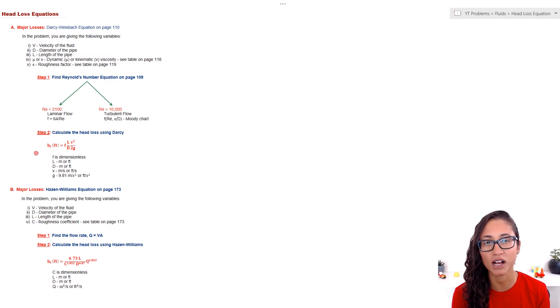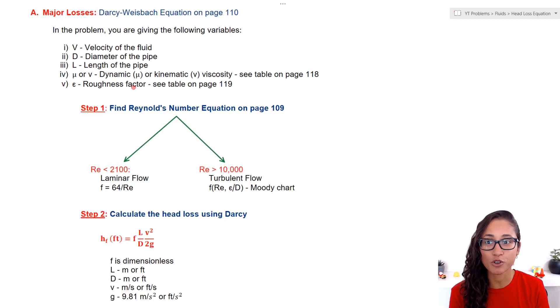We have two equations to calculate the major losses: Darcy and Hazen-Williams. So which equation do you use? Well, it depends on the variables that you are given in the problem. If you are given dynamic or kinematic viscosity and the roughness factor, you have to use Darcy.